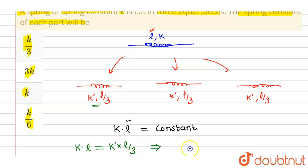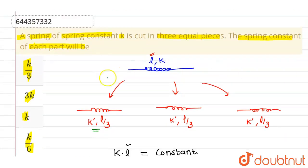So from here, the value of k dash or new spring constant is three times the initial spring constant. So k dash equals to 3k. This is our answer. So from these options, option 2 is correct and rest all options are incorrect. I hope you understood.